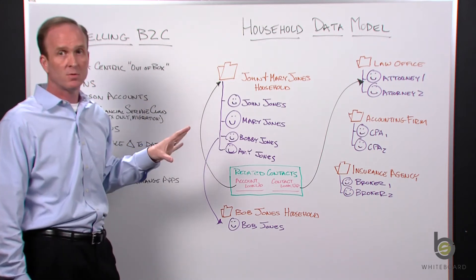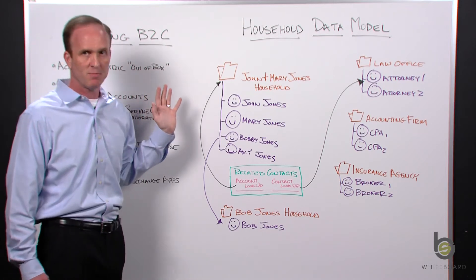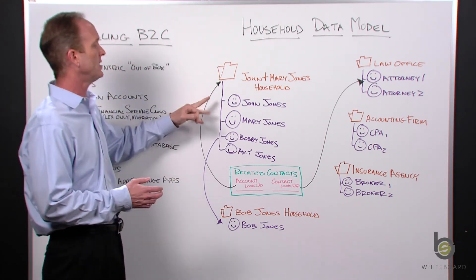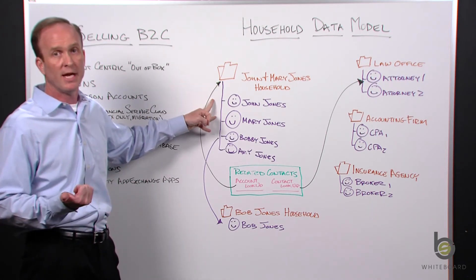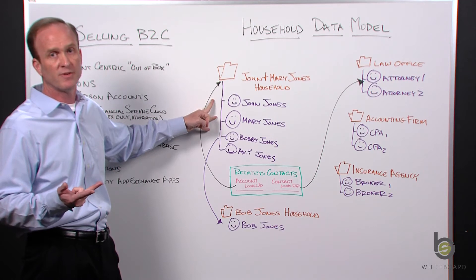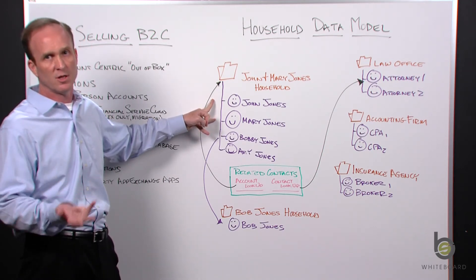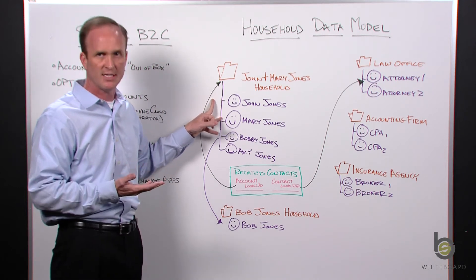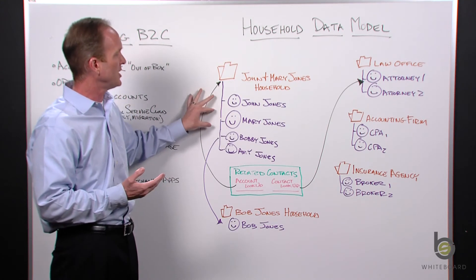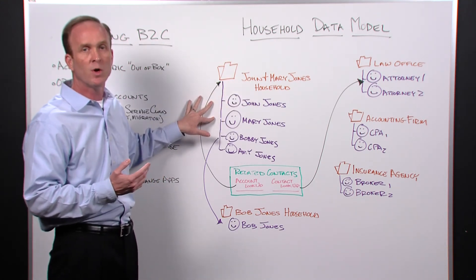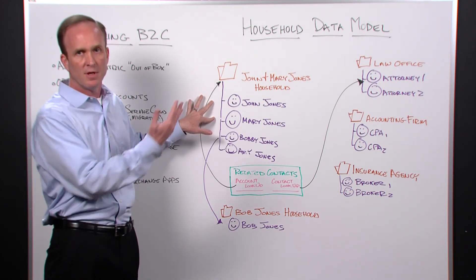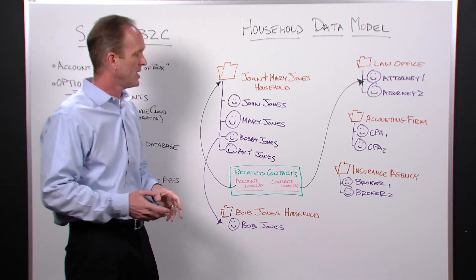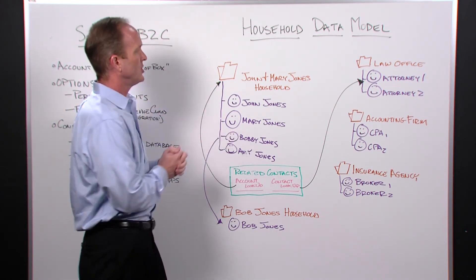When dealing with business to consumer selling, other contacts typically get involved. For example, if we're a real estate agency selling a new house to John and Mary Jones, we may need to know who their banker, attorney, insurance provider, or selling realtor is. Similarly, if we're a financial advisor or wealth management firm selling financial products to this household, we want to know other contacts that influence their financial buying decisions — a CPA, attorney, insurance broker, or personal banker.